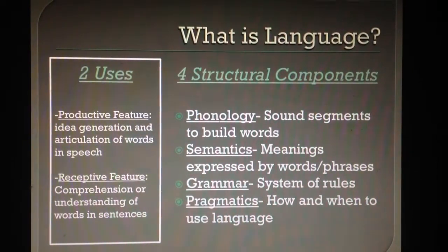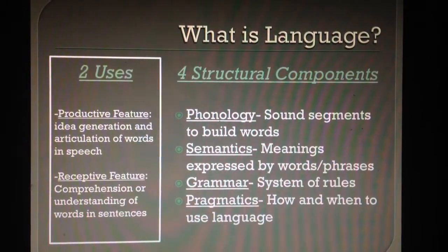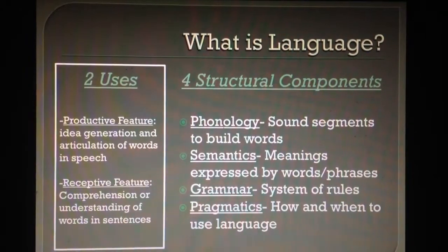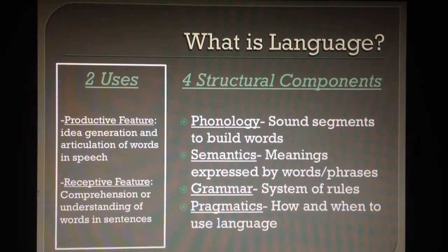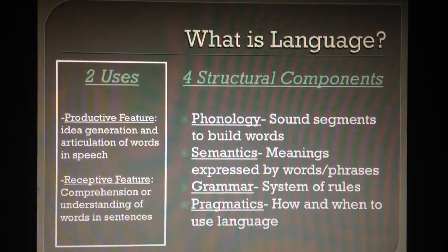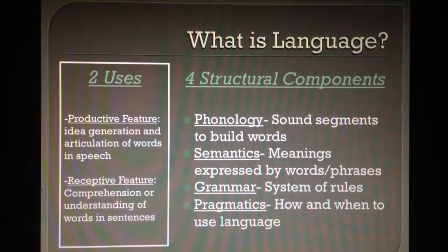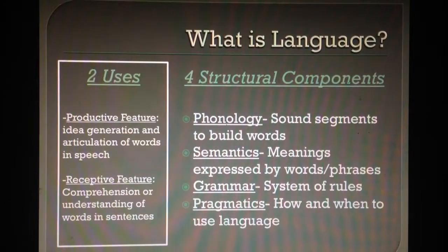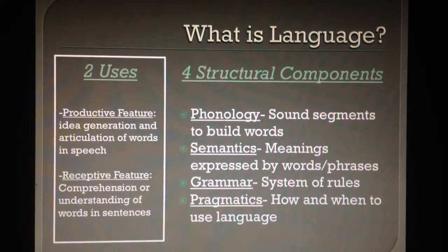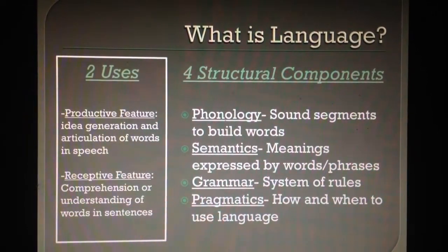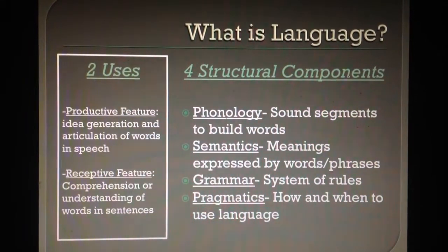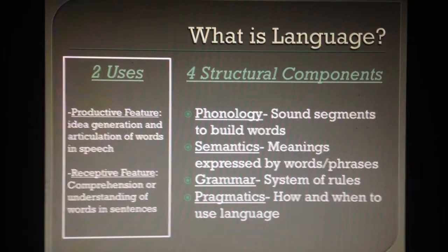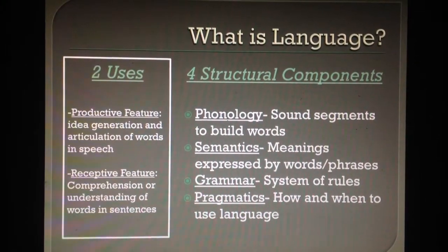The second component is semantics. This is the system of meanings that are expressed by words and phrases. In order to serve as a means of communication between people, words must have a shared or conventional meaning. Picking out the correct meaning for each new word is a major learning task for children. As the third component, grammar is a system of rules by which words and phrases are arranged to make meaningful statements. Children need to learn how to use the ordering of words to mark grammatical functions, such as subject or direct object.